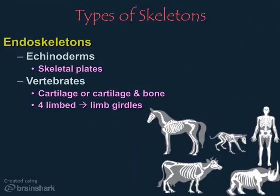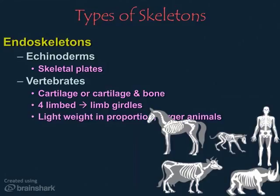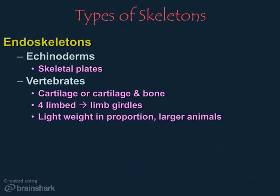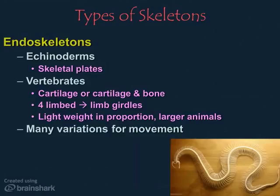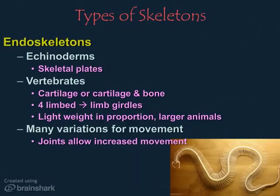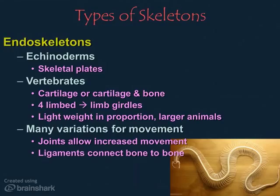As organisms began to walk on four and then two legs, limb girdles in the pelvic and shoulder areas developed to support limbs and allow more efficient movement on land. Unlike animals with an exoskeleton, endoskeletons are light in weight in proportion to the bodies they support, so these animals can grow quite large — elephants and blue whales, for example. Joints, where two bones meet and move, allow for this, and strong connective tissue called ligaments connects bones to each other, increasing the strength of the overall skeleton and allowing for fantastic displays of movement.